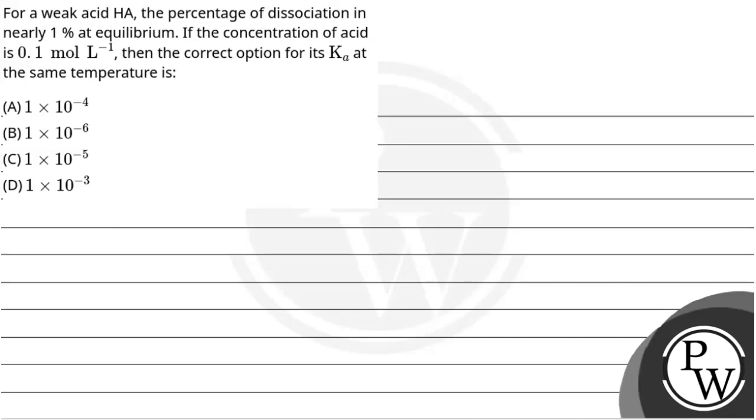Hello, let's read the question. For a weak acid HA, the percentage of dissociation is nearly 1% at equilibrium. If the concentration of acid is 0.1 mol per liter, then the correct option for its Ka at the same temperature is - we are given four options and we have to select the correct one.